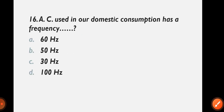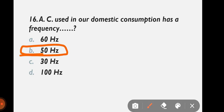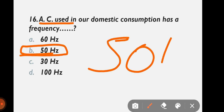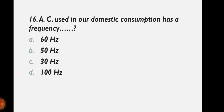Question 16: AC used in our domestic consumption has a frequency of — 60 Hz, 50 Hz, 30 Hz, or 100 Hz? The correct answer is option B: 50 hertz. The AC used for domestic consumption has a frequency of 50 hertz. This is an important fact.